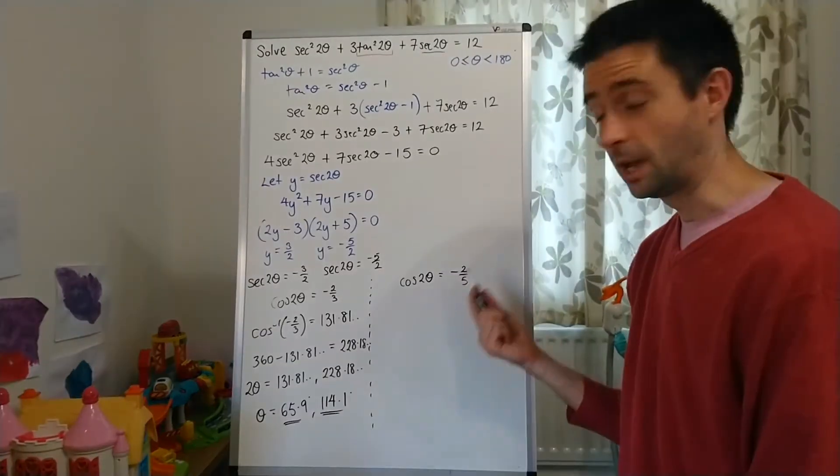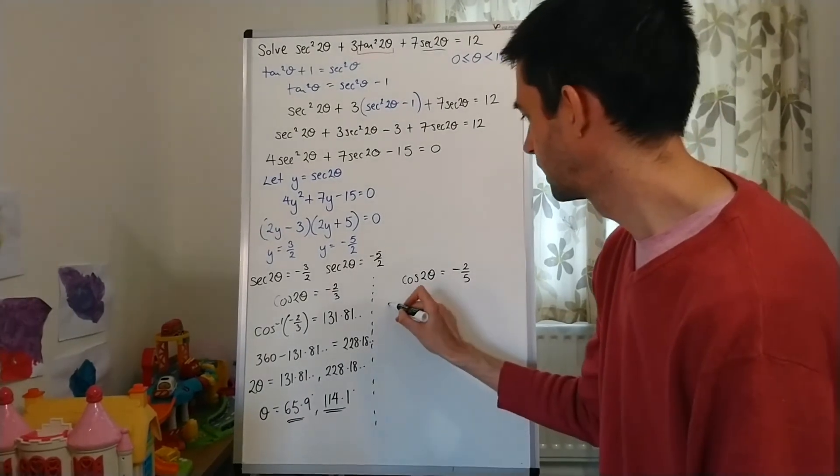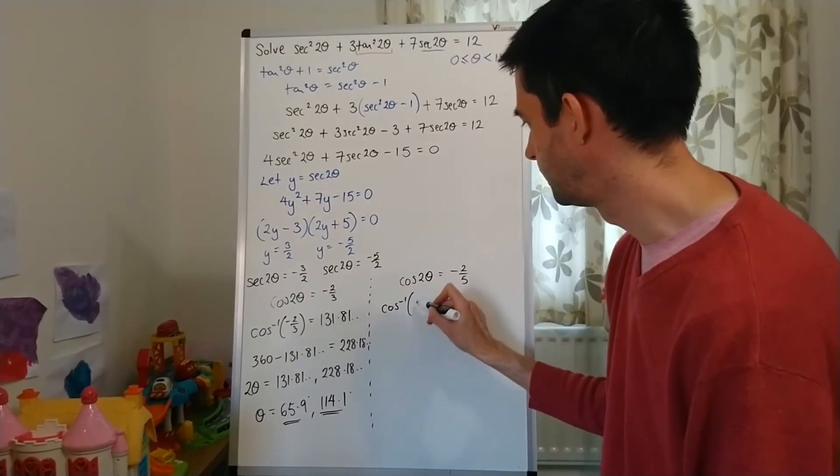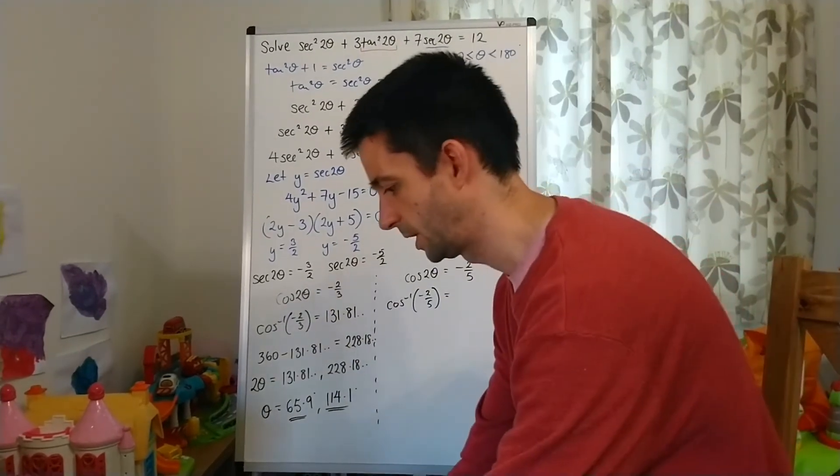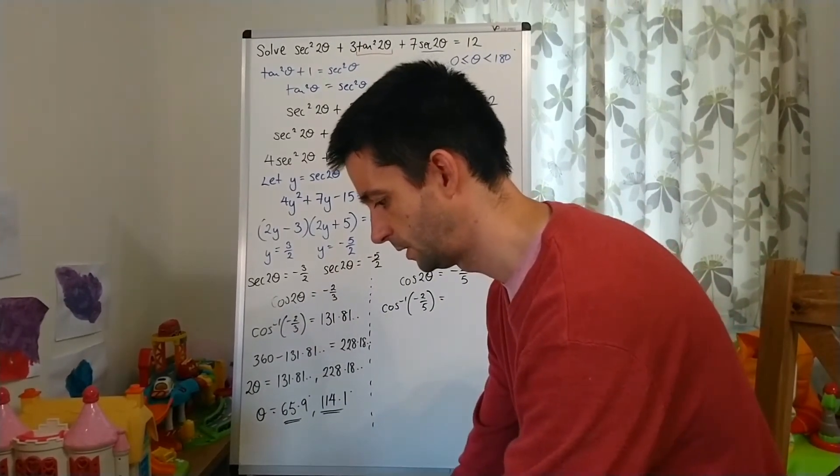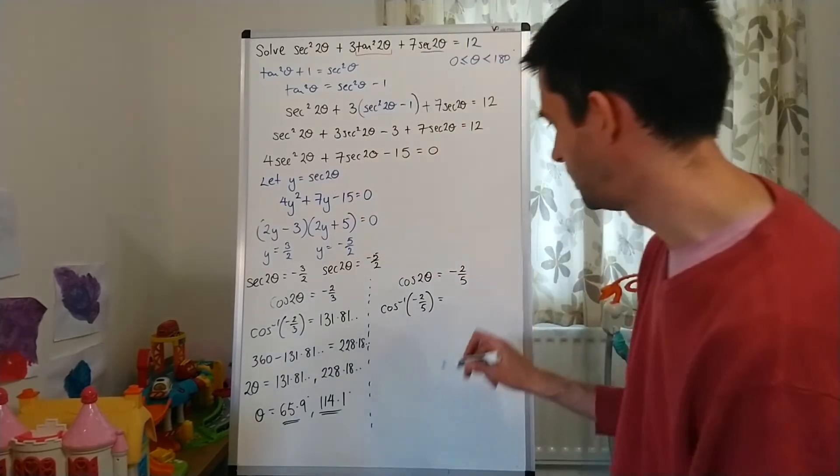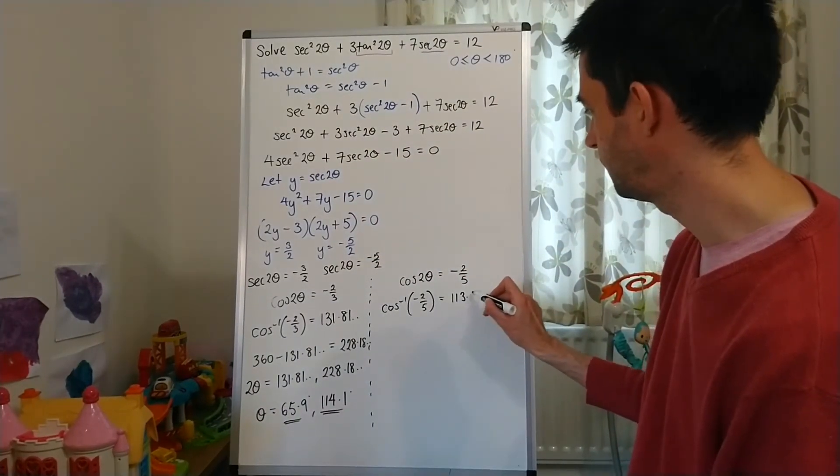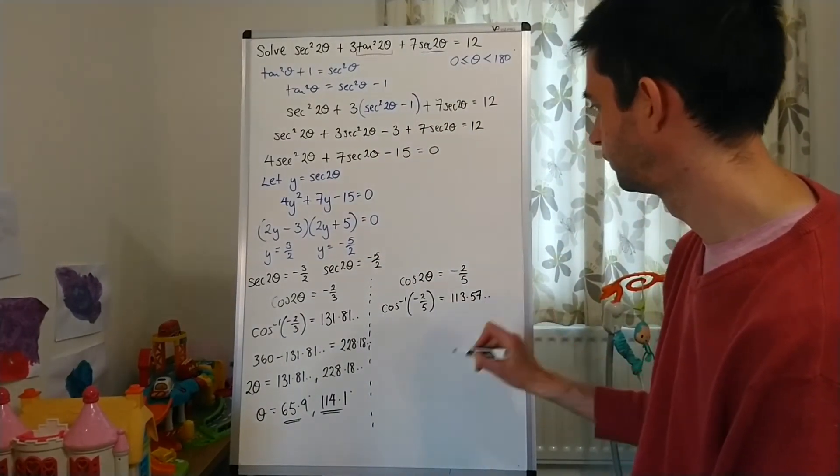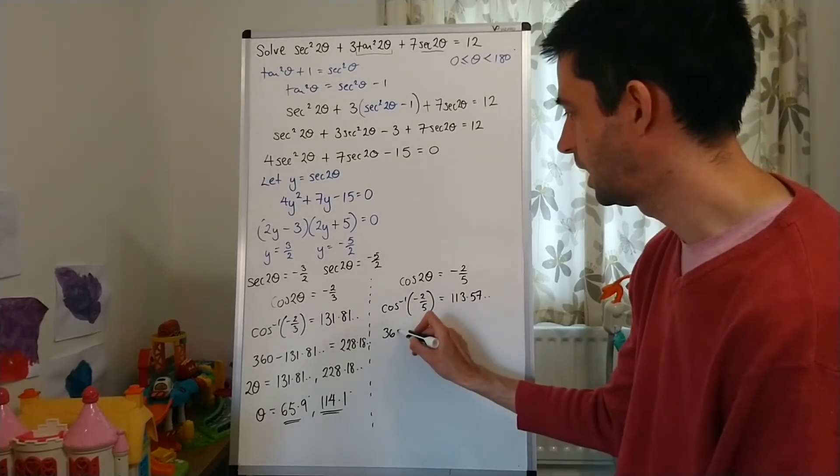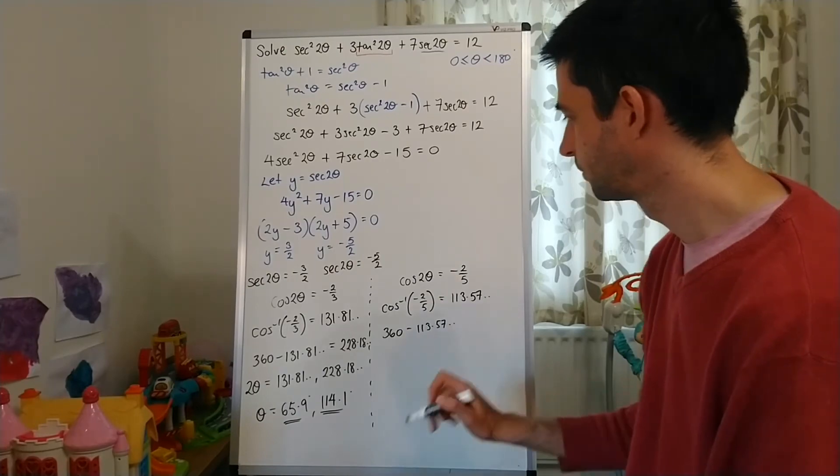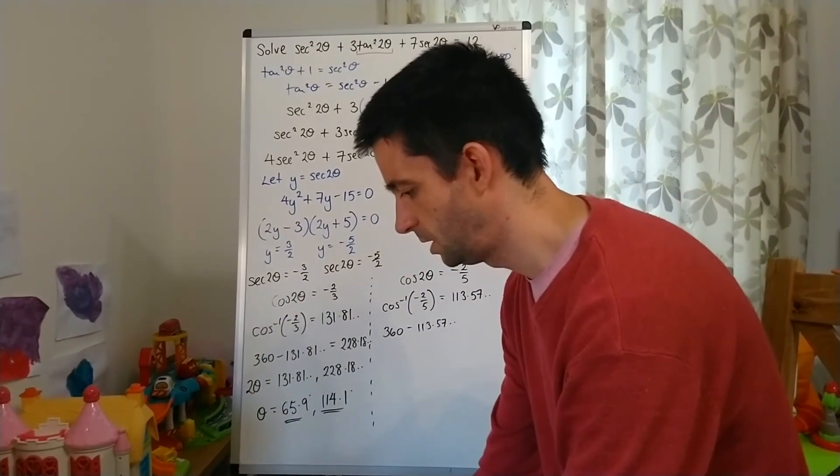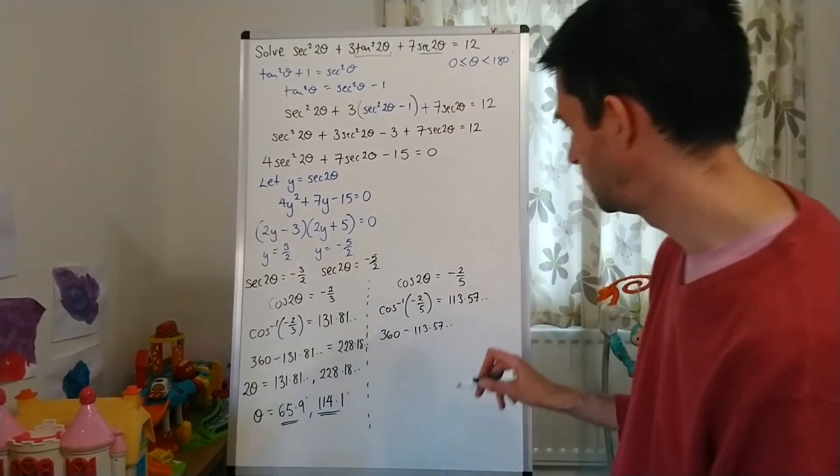And now, it just remains to solve this one. So, cos inverse of -2/5. Again, doing that in my calculator, cos inverse of -2/5 is 113.57. Second solution, as before, 360 minus, which is going to be 246.42.